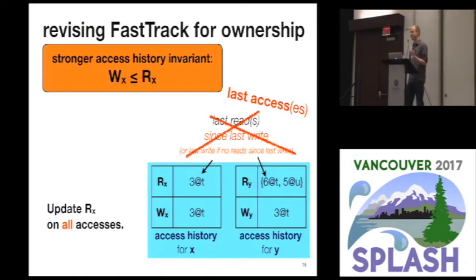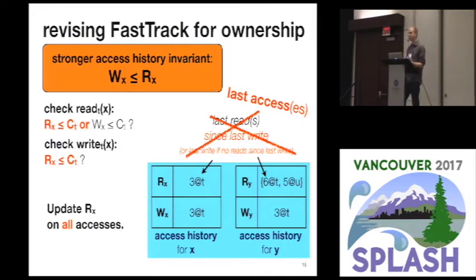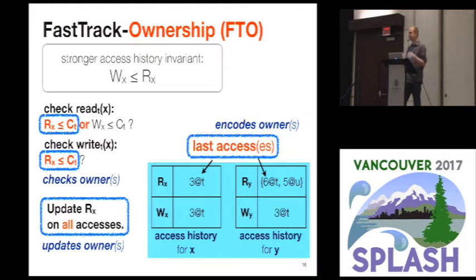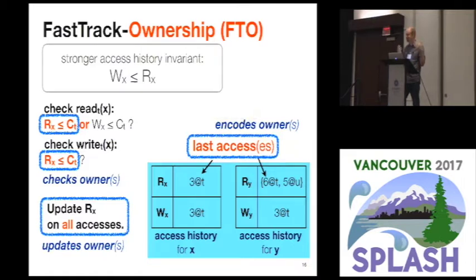Now when we do checks in this system, because we have this nice transitive relation between the time of the last write and the times of last reads, we can actually do all of our checks with respect to times of last reads — which are really last accesses more generally. The key thing here is that by encoding this notion of last accesses, we now have baked in a notion of ownership directly into the access history. The threads that last accessed a memory location are the owners of that memory location — we may have one or we may have multiple. The checks that the data race detector is already doing already check that ownership as part of the work they have to do, so we just get to use that for free.